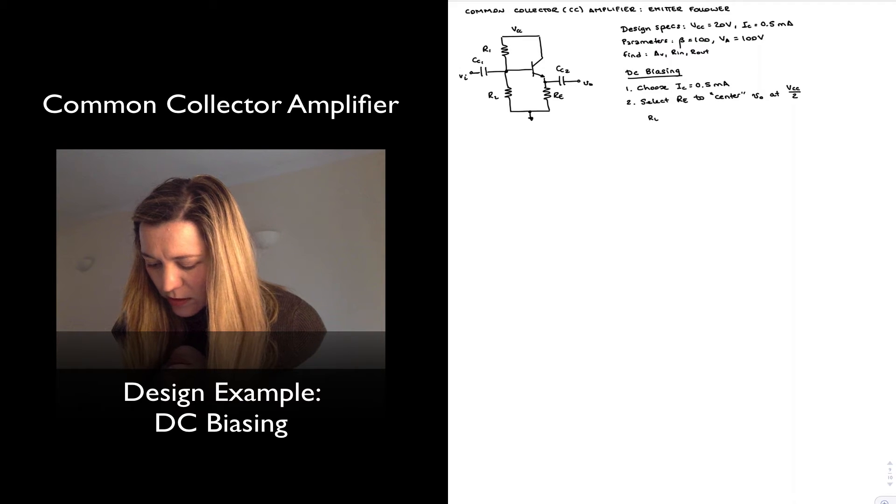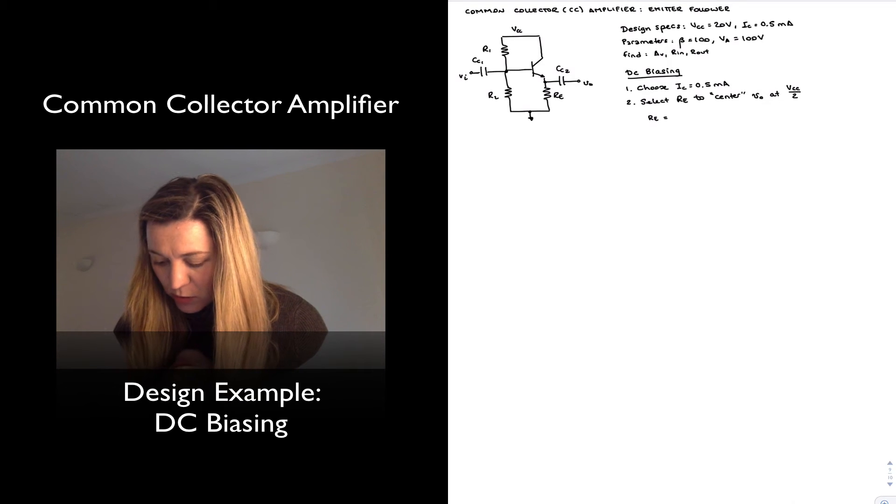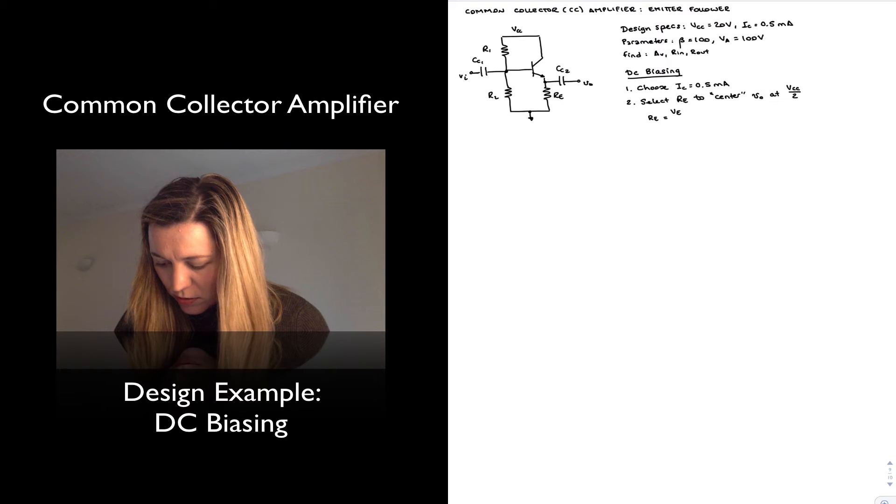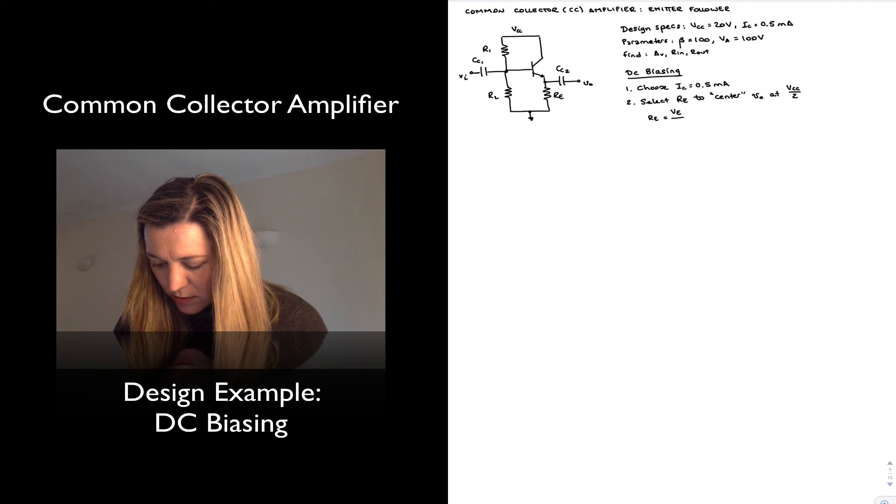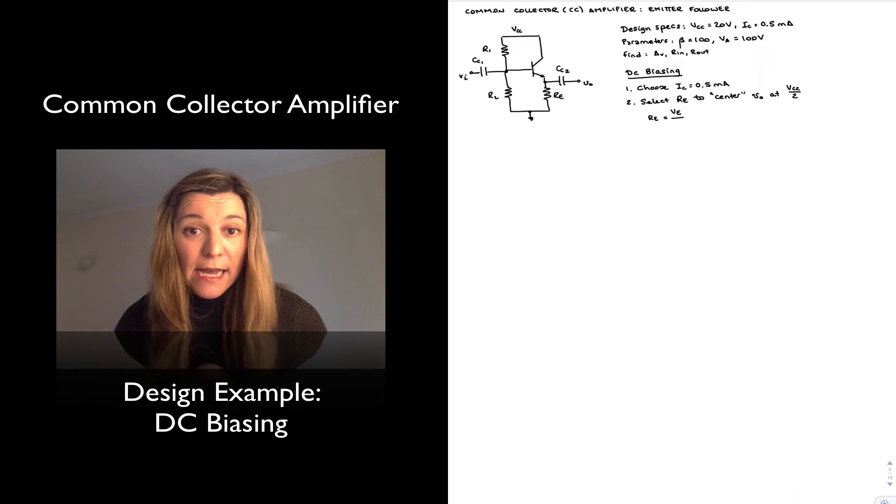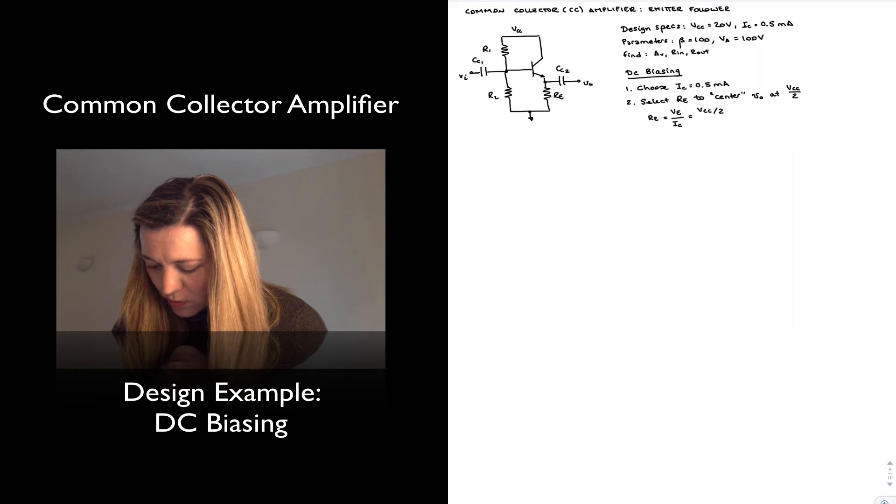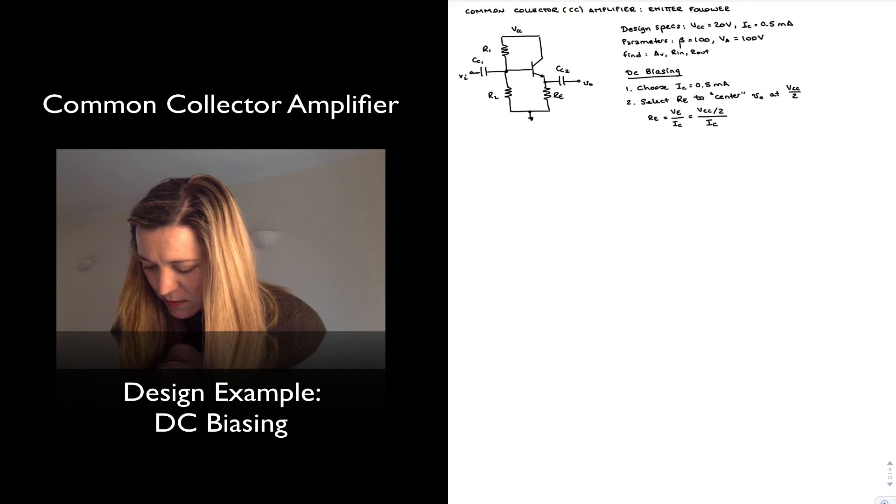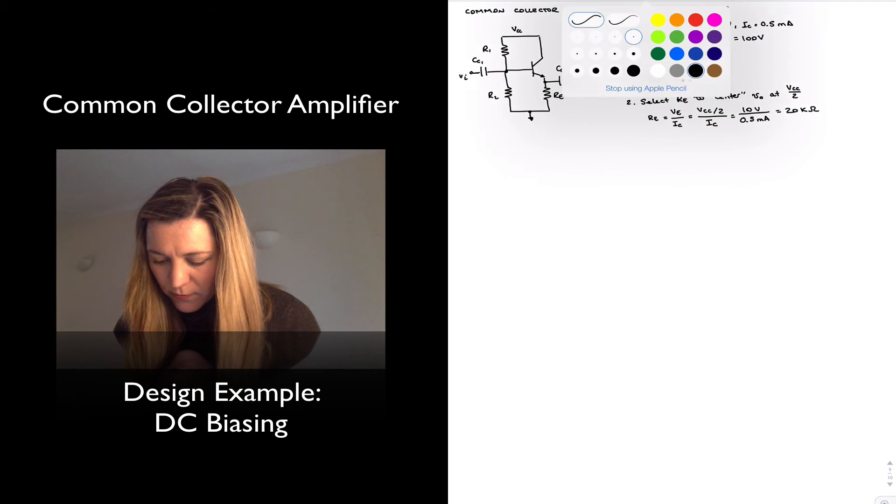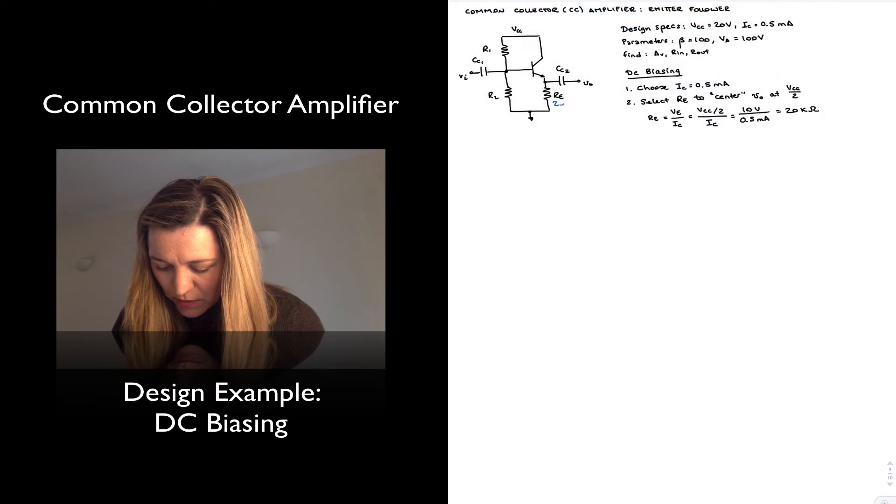And so my Re, by definition or by Ohm's law, is equal to the voltage across the emitter divided by the current, which is going to approximate as IC. I want Ve to be half of VCC. So this is going to be 10 volts divided by half a milliamp, or 20 kilo-ohms. So that's my first value.